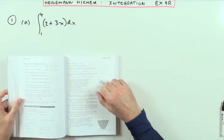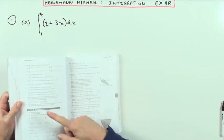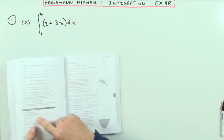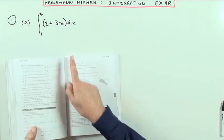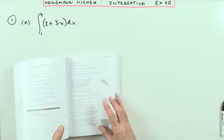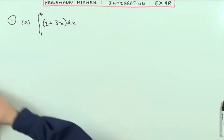Heinemann Higher, chapter 9 on integration, the mixed exercise 9R at the end. First one, it says evaluate the following, evaluate the integral and draw a sketch to illustrate the integral as an area.